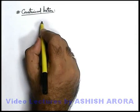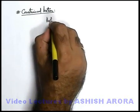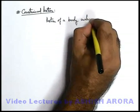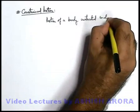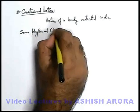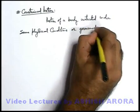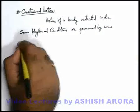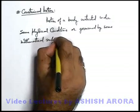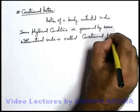Now let's discuss constrained motion. When we talk about constrained motion, we can simply state it is the motion of a body restricted under some physical conditions or governed by some mathematical rules. This is called constrained motion.